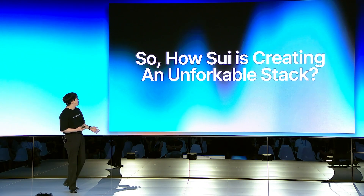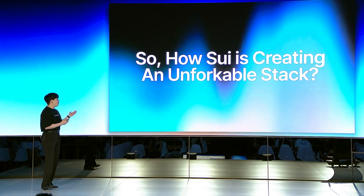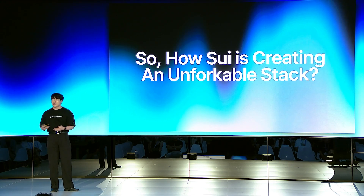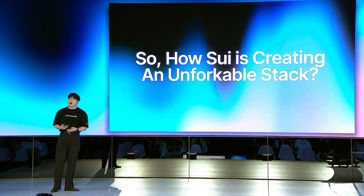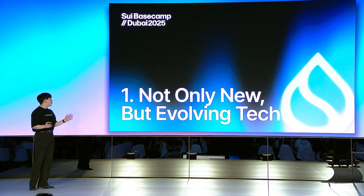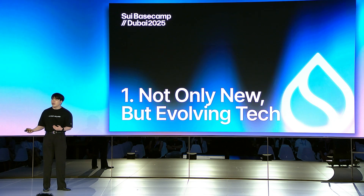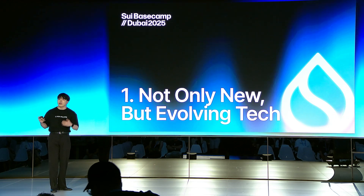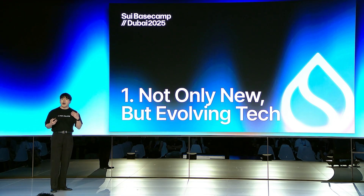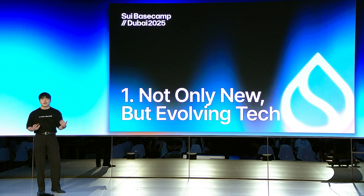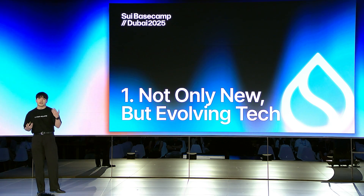So let's go into the details on how SUI is creating an unforkable network stack. I've identified three main reasons as a researcher while exploring SUI's architecture and infrastructure. Number one: SUI's tech is not only new, but it is continuously evolving. It is really hard for a competitor to copy and paste SUI's tech, because once they finish comprehending the technology, SUI introduces yet another new technology to comprehend. That makes it too hard for competitors to keep up with SUI's technological development.